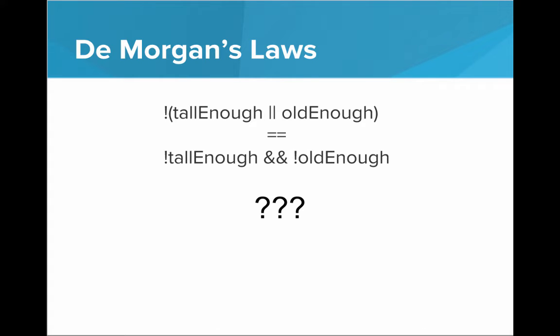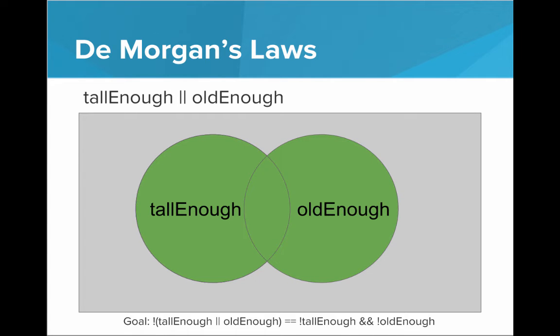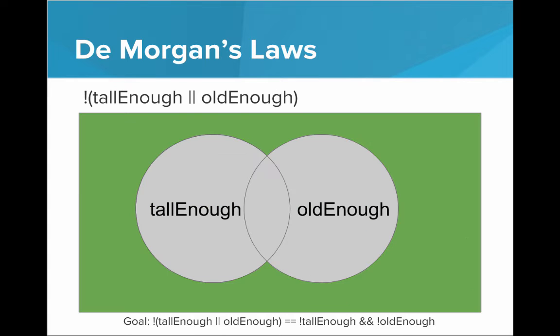How about negating OR? According to DeMorgan, NOT (tall enough OR old enough) is the same thing as NOT tall enough AND NOT old enough. Let's put that to the test. Here we have the set of people who are tall enough or old enough. To negate that, we take the opposite — these are all the people in the world who are NOT (tall enough OR old enough).